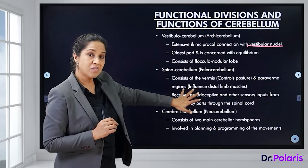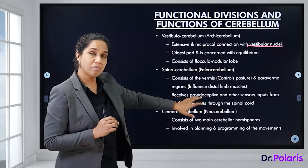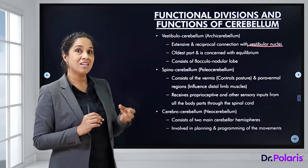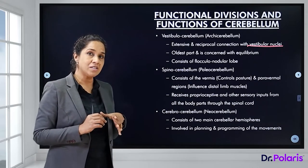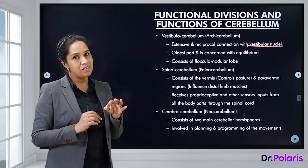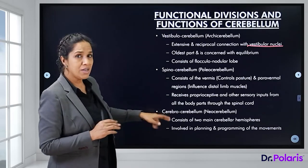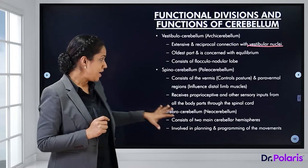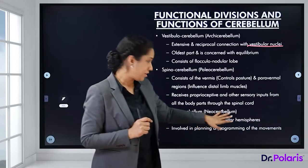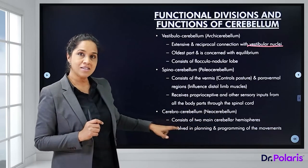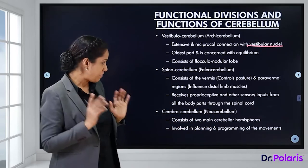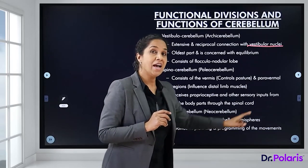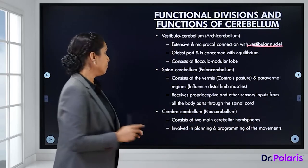Proprioceptive impulses come from receptors in the muscles and joints. The cerebrocerebellum, also called the neocerebellum, consists of the two main cerebellar hemispheres and is involved in planning and programming of motor movements.